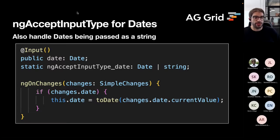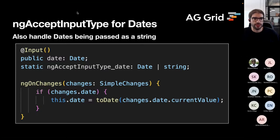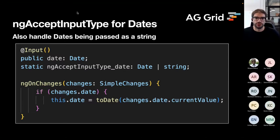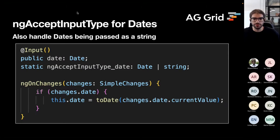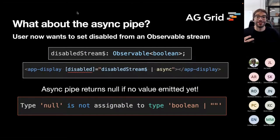This doesn't just work for booleans. You could use it for dates as well. For a date input, you use ngAcceptInputType_date to match the property name, and type it as either a Date or a string. Then in ngOnChanges, when changes arrive for date, you run them through a toDate coercion function. This is a good way for your component to handle both string and Date inputs, since quite often we get string representations of dates from APIs.